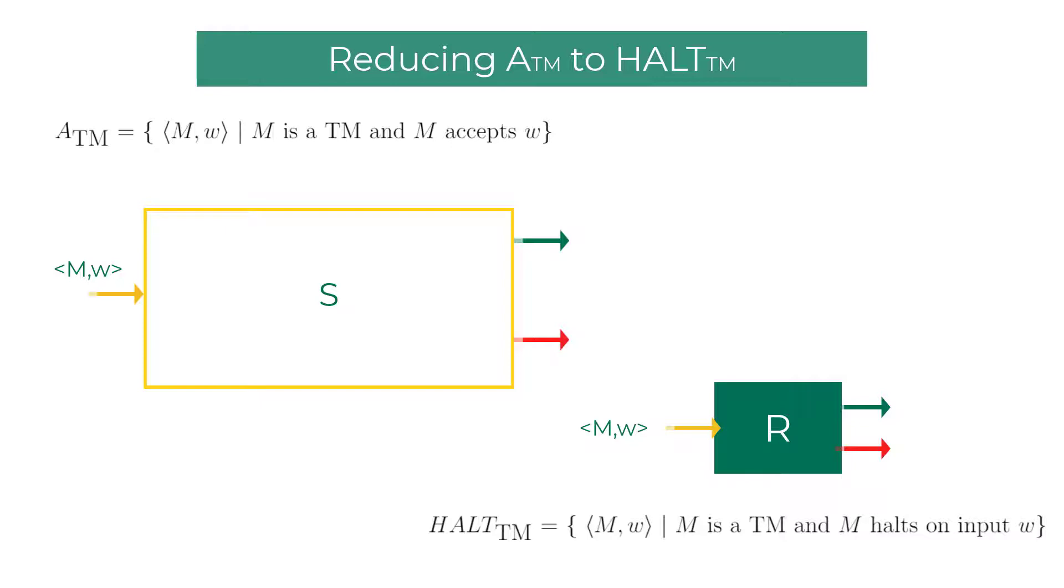We can build a decider S for ATM by using a magical decider R that decides halting problem. Here is what we are going to do. We will simulate the machine M on string W on HALTTM decider R. If R ends up in reject state it means the machine M will end up in a loop on string W. Hence there is no way machine M is going to accept the string W. So the decider S which is supposed to decide ATM confidently can reject the machine string pair M, W.